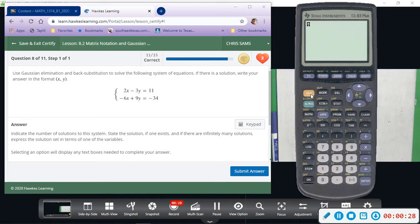So what I'm going to do is go second matrix, arrow over to edit, hit enter on A. We're going to change A up so we have two rows, three columns, so we're still going to have a 2 by 3. Now I'm going to start inserting the values.